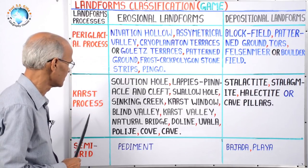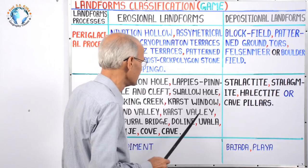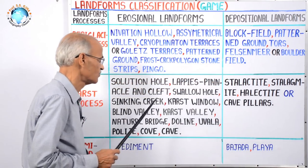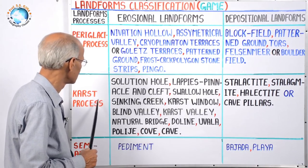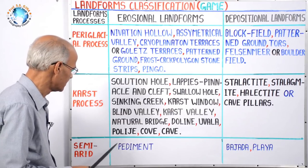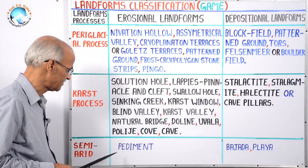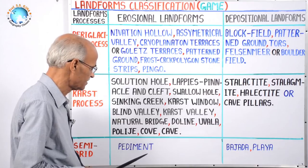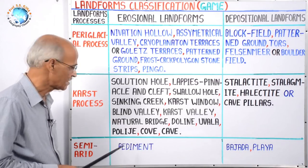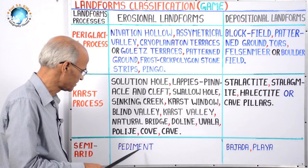Likewise, the karst process also develops erosional landforms, given in a box starting from solution hole to cave. The depositional landforms have been given in sequence from stalactite to cave pillars. If the question is composite — all erosional and depositional landforms by karst process — you take both boxes. Finally, there is the semi-arid process: erosional and depositional landforms like playa are in the semi-arid region but eroded and deposited by the fluvial process. The question may ask to discuss all erosional and depositional landforms in a semi-arid region made by the fluvial process.